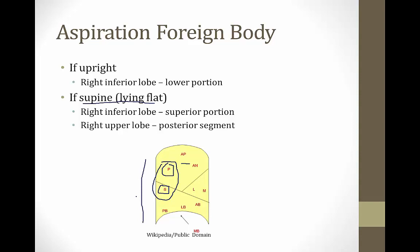The superior portion of the inferior lobe is sometimes called the apical portion of the inferior lobe because it forms a point. So you may read that when a patient is supine and aspirates, it goes to the apex of the inferior lobe — that just means the superior portion of the inferior lobe — but a foreign body can also go to the posterior portion of the upper lobe.